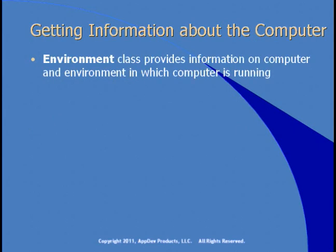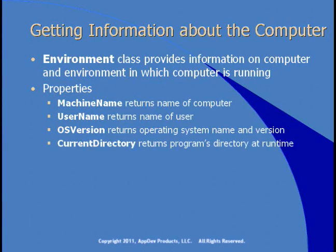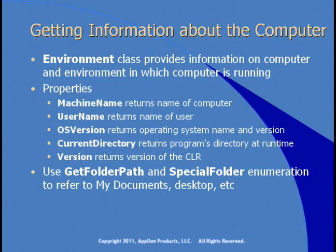You can also use the Environment class to get information about a computer. Environment provides information on the computer and the environment in which the computer is running. There are a number of properties in the Environment class that you can use, such as MachineName or UserName, OSVersion to return the name and version of the operating system, CurrentDirectory to tell you where the program's running, and Version to get the version of the CLR — the Common Language Runtime, which is the .NET runtime. You can also use the GetFolderPath method and a SpecialFolder enumeration to refer to folders like My Documents, Desktop, etc.